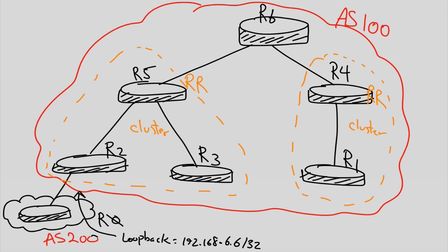In the first step, I want to advertise 192.168.6.6/32 into AS100 via R2. I will configure next-hop-self on R2 toward R5 and let's see the result on R5.